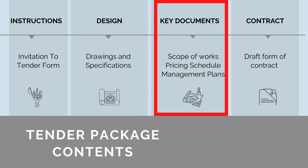We also need to provide key documents that clearly define the subcontractor's specific scope. The key documents here will be the scope of works that tells the contractor exactly what they're required to do. Others include the pricing schedule, battery limit drawings, management plans, and more.